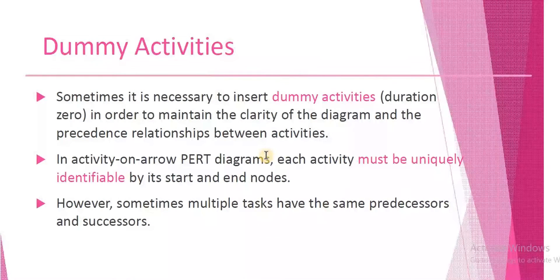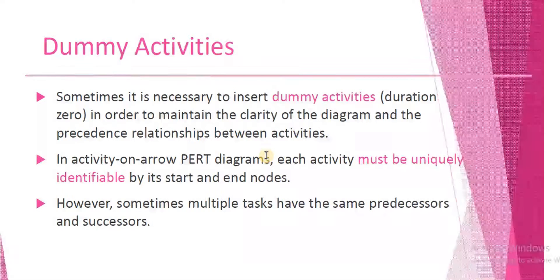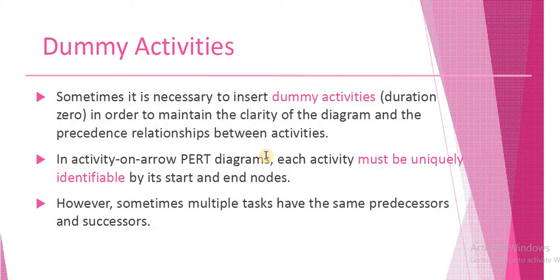A dummy activity has a duration of 0. It is used to preserve the precedence relationships between activities. In activity on arrow diagrams, each activity must be uniquely identifiable by its start and end nodes. Sometimes multiple tasks have the same predecessors and the same successors.